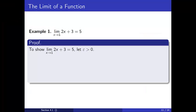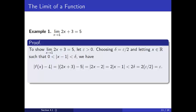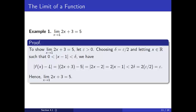We are now ready for our formal proof. To show that the limit of 2x plus 3 as x approaches 1 is 5, let epsilon be positive. Choosing delta equal to epsilon over 2 and letting x be a real number such that the distance between x and 1 is between 0 and delta, we have that the distance between f of x and L is equal to the absolute value of 2x plus 3 minus 5, which is equal to absolute value of 2x minus 2. This, in turn, is equal to 2 times the absolute value of x minus 1, which is less than 2 times delta, which is equal to 2 times epsilon over 2, which is equal to epsilon. Therefore, we've found a delta so that if x is no more than delta units away from 1, then f of x is no more than epsilon units away from L. Hence, the limit of 2x plus 3 as x approaches 1 is equal to 5.